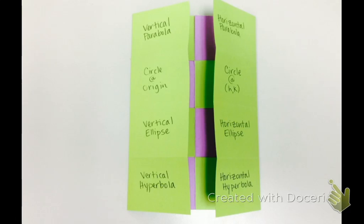I've got vertical parabola, horizontal parabola, circle at the origin, circle at HK, vertical ellipse, horizontal ellipse, vertical hyperbola, and horizontal hyperbola.